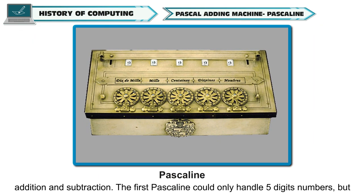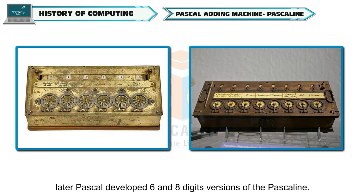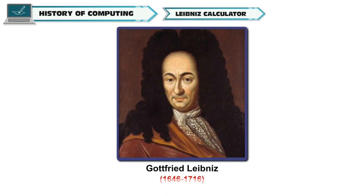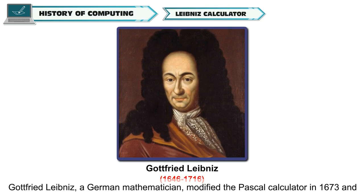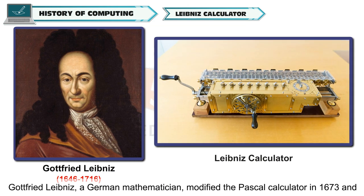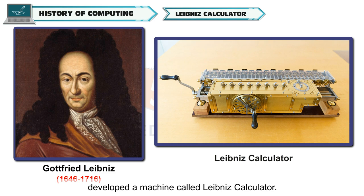The first Pascaline could only handle five-digit numbers, but later Pascaline developed six- and eight-digit versions. Gottfried Leibniz, a German mathematician, modified the Pascal calculator in 1673 and developed a machine called the Leibniz calculator.